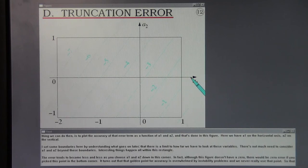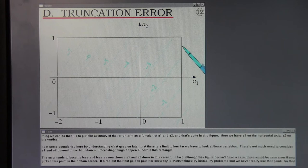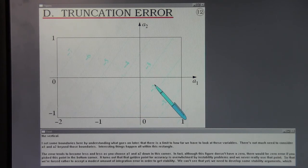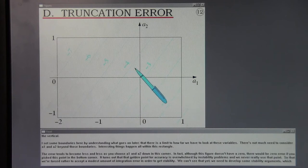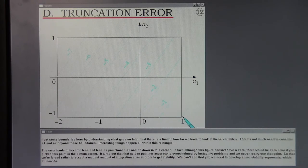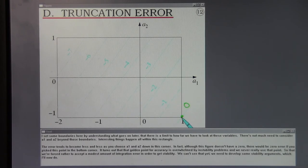Here we have A1 on the horizontal axis, A2 on the vertical. I set some boundaries here by understanding what goes on later that there's some limit to how far we have to look at these variables. The error tends to become less and less as you choose A1 and A2 down in this corner. In fact, there would be zero error if you pick this point in the bottom corner. It turns out that that golden point for accuracy is overwhelmed by instability problems and we never really use that point so that we're forced rather to accept a modest amount of integration error in order to get stability. We can't see that yet. We need to develop some stability arguments which I'll now do.